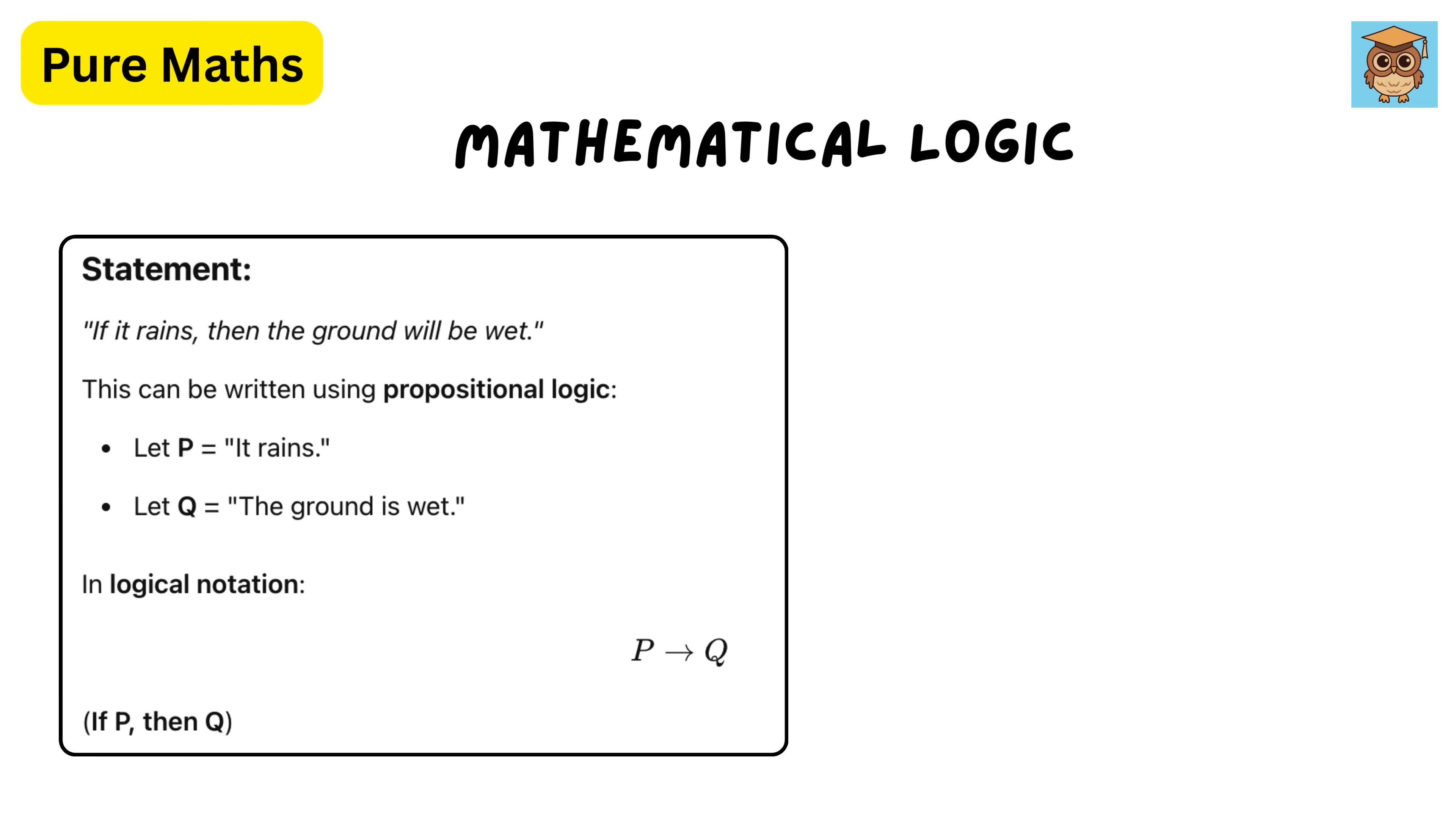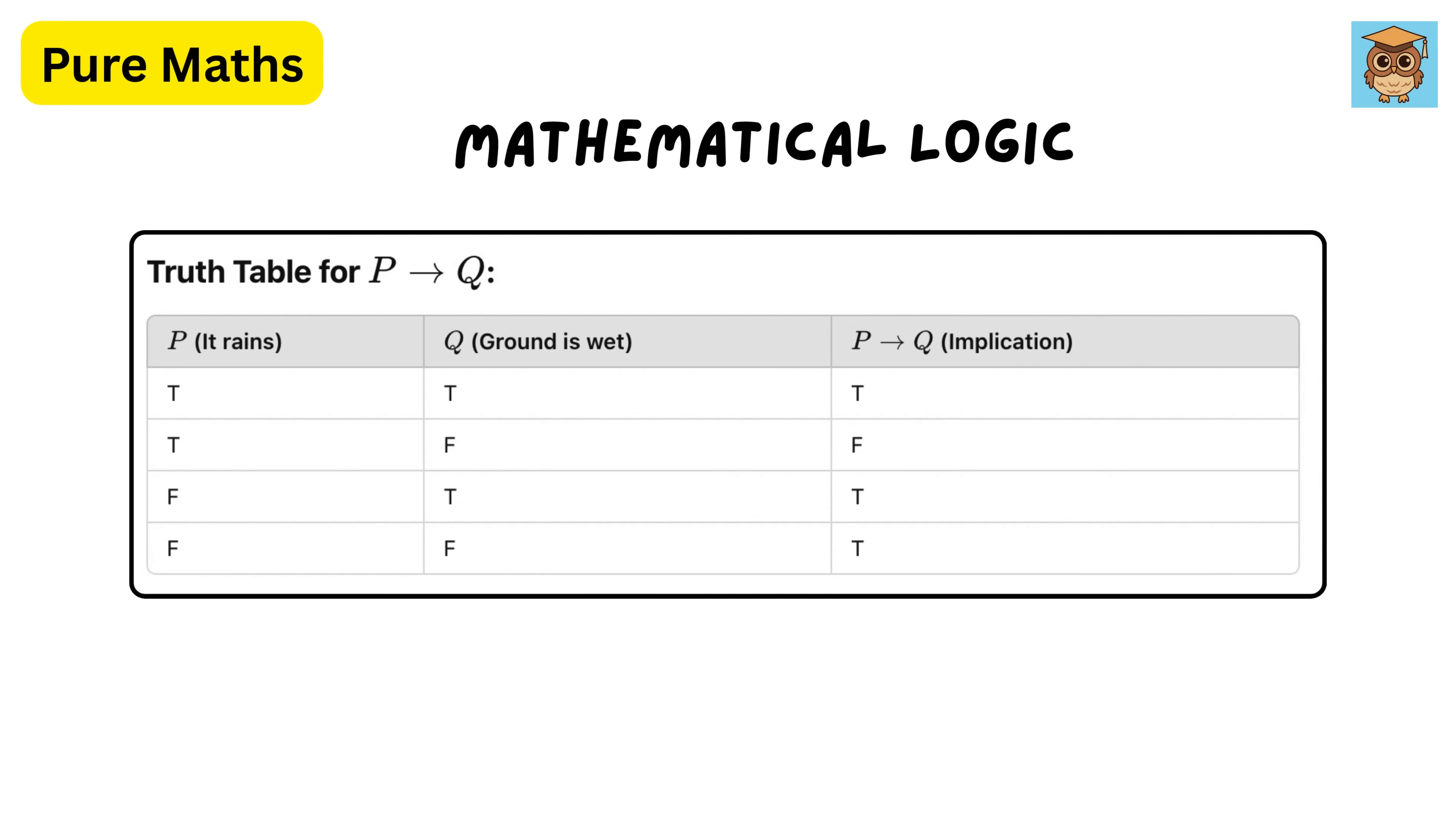However, if p is false, the truth of q does not affect the implication. To understand this better, consider the truth values.